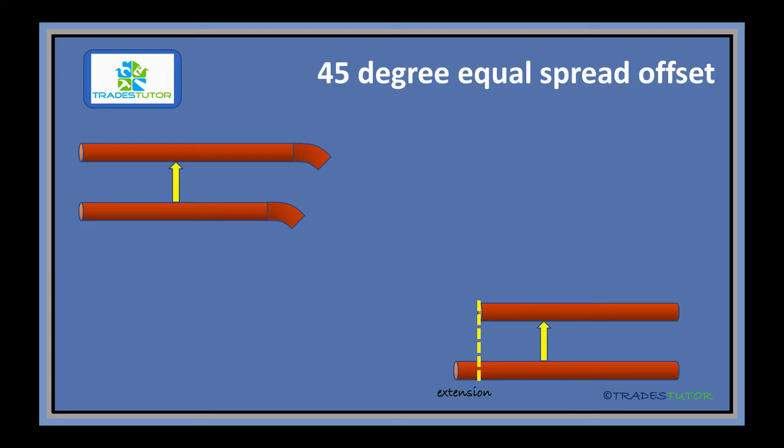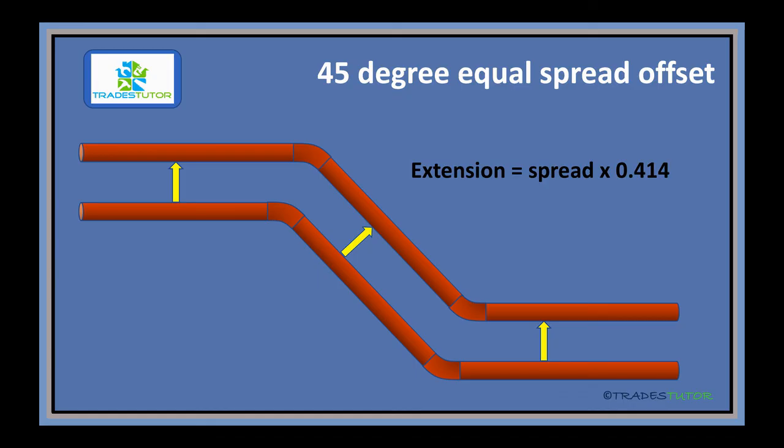And there you have it. That's it. Bring this back. Equals for a 45 degree equal spread offset. And that's what you need to know. The extension is equal to the spread times 0.414. All right?